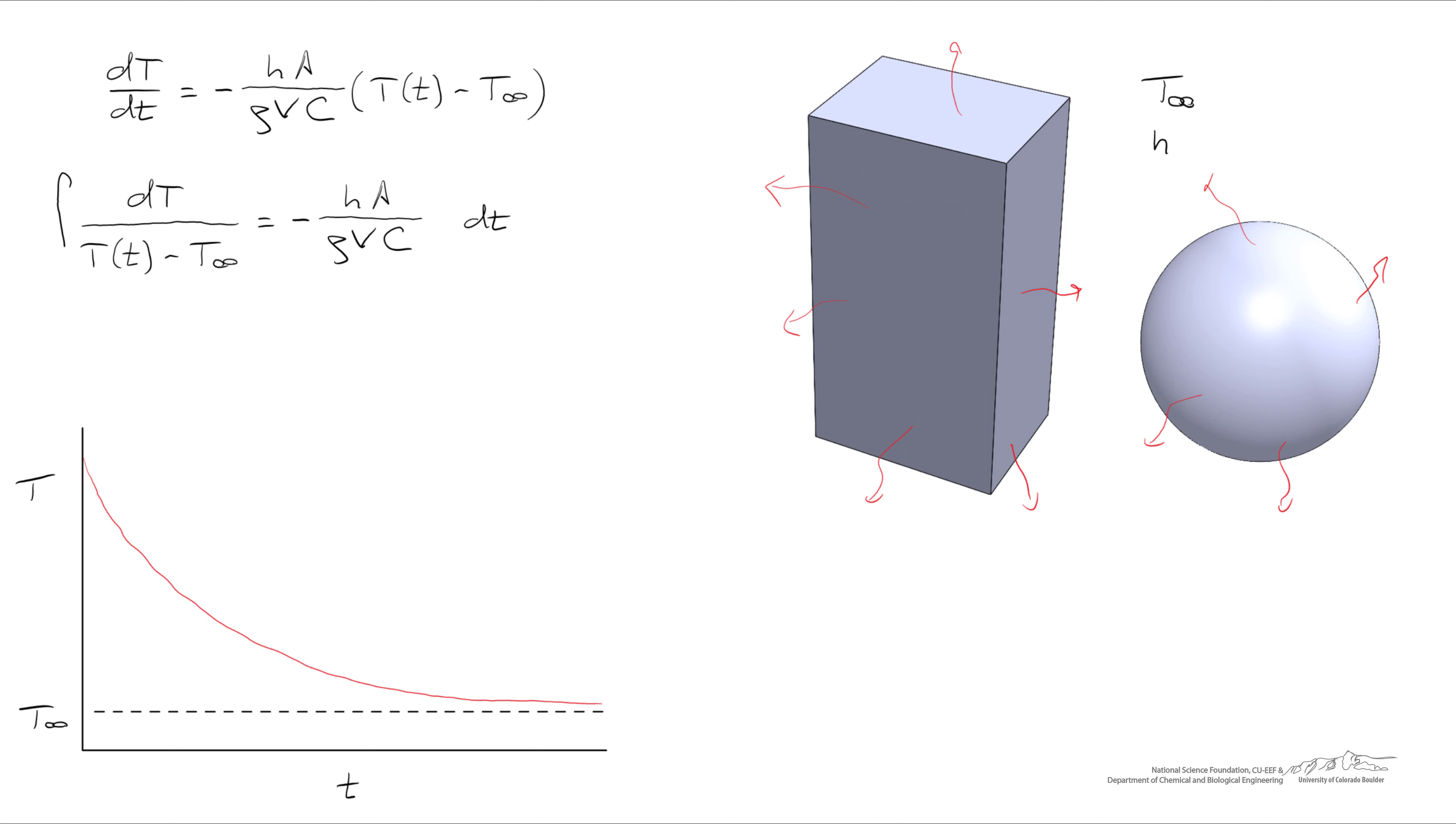To solve for the temperature as a function of time, we'll start with our original differential equation, separate them, and we'll integrate it from T initial to some temperature, and we'll integrate time from zero to some arbitrary time. Upon evaluating the integral, the left hand side turns into the natural log of this ratio, and the right hand side is equal to HAT over rho VC.